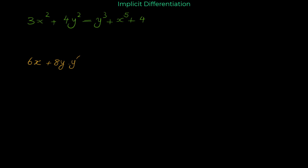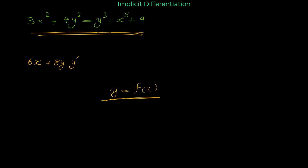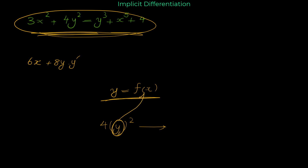Why do we multiply by y prime for terms involving y? It's better to know the reason rather than memorize it. When we have 4y², y is a function of x. This relation implicitly defines y as a function of x, so y is actually f(x), defined implicitly by this relation. So when we want to find the derivative of 4y², this y is basically f(x).